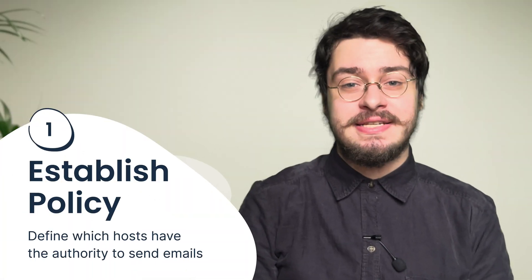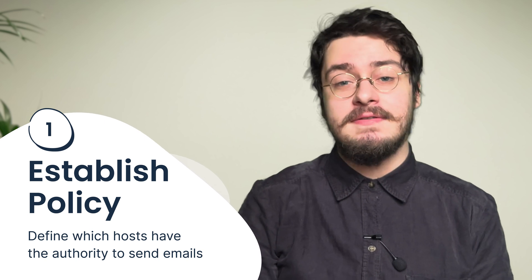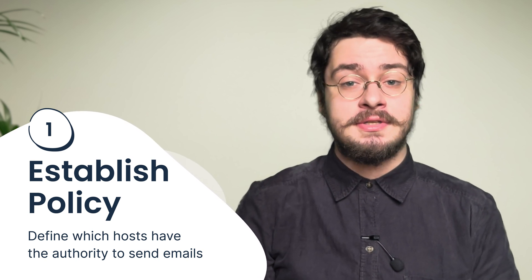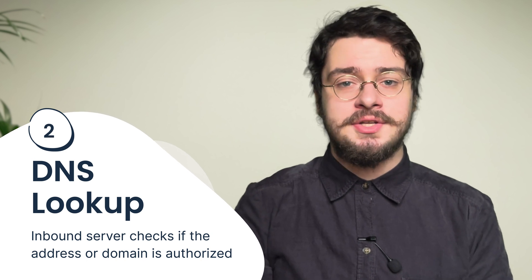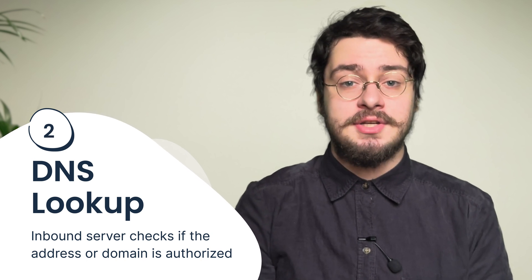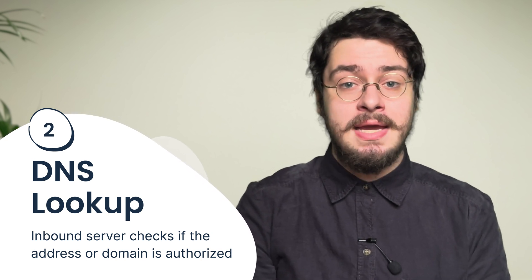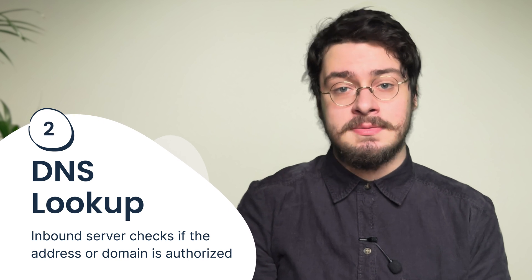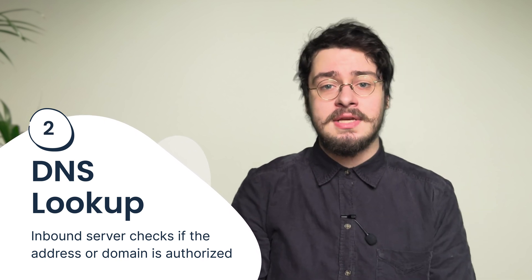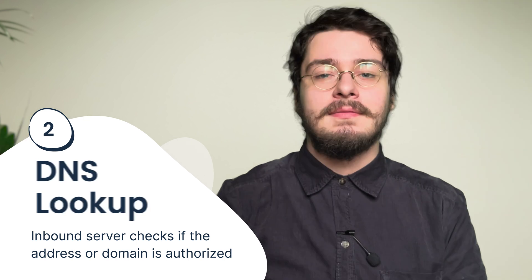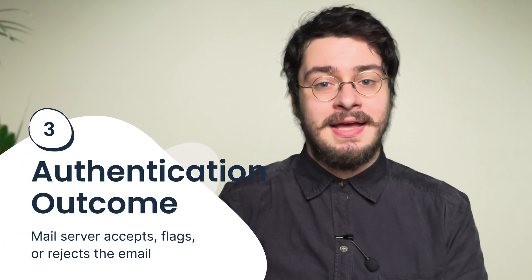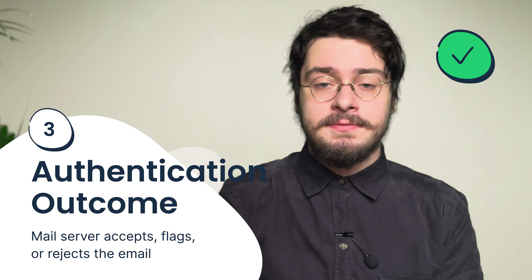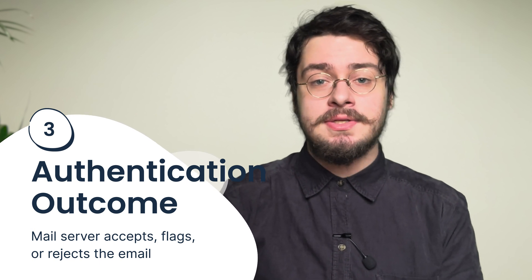The whole process has only three steps. First, this is where the SPF record gets created — the goal is to establish an authentication policy and define which hosts have the authority to send emails. The second step is the DNS lookup, during which the inbound server checks if the IP address or domain in the email is authorized in the SPF. Then the inbound server proceeds to verify the message. Finally, you get the authentication outcome — the mail server accepts, flags, or rejects the email based on the guidelines in the SPF record.